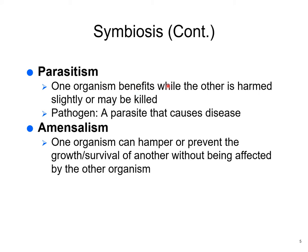Parasitism is when one organism benefits while the other is harmed or may be killed. A pathogen is a parasite that causes disease — this could be strep throat, COVID, or any type of parasitic helminth worm. There are many types of parasites. Amensalism is when one organism hampers or prevents the growth of another without being affected itself. Penicillium works this way — it pushes other bacteria away but doesn't directly eat the other organism.